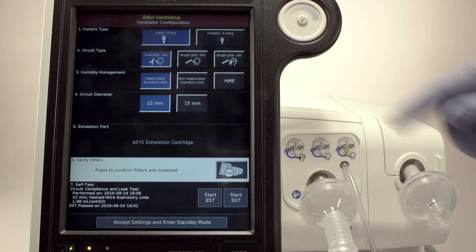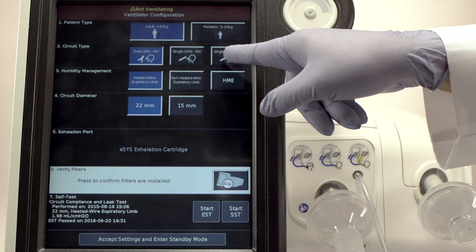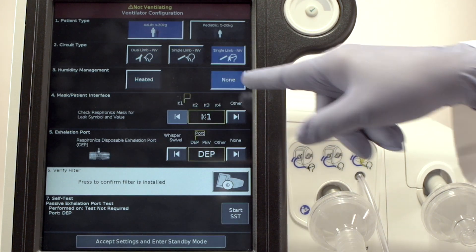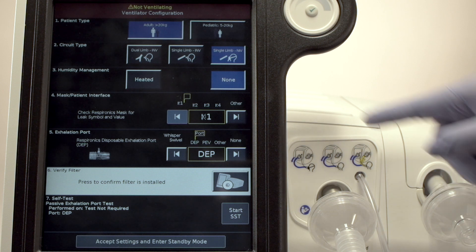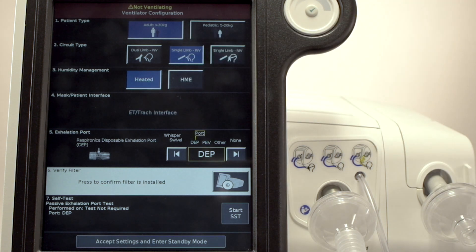Select Adult Patient, Single Limb NIV, and No Humidity Management. Note that we could also have selected Single Limb Invasive Ventilation, and the rest of the settings would change to accommodate this circuit type.